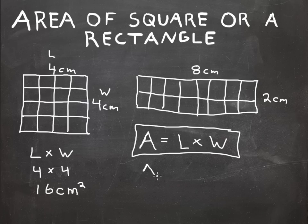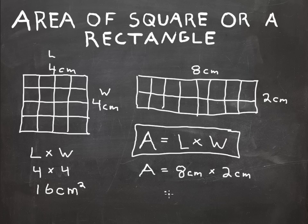In this case, area equals 8 centimeters times 2 centimeters, which equals 16. Don't forget to square your unit: centimeters squared.